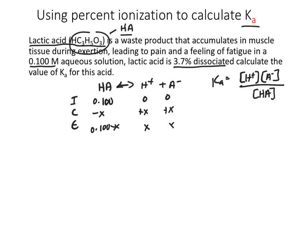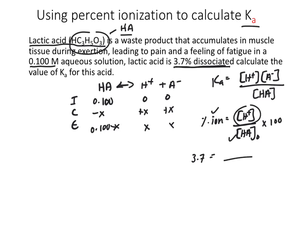We don't have a Ka value, but we've been given percent ionization. Remember: percent ionization equals H⁺ concentration at equilibrium divided by the initial concentration of HA, times 100. We know the percent ionization and the initial concentration; the only unknown is H⁺. Plugging in and solving — dividing out the 100 and multiplying by 0.1 — we get H⁺ equals 3.7 × 10⁻³ M. This value also equals X.